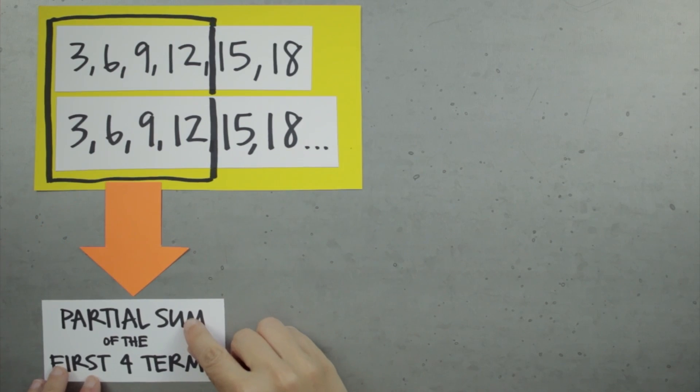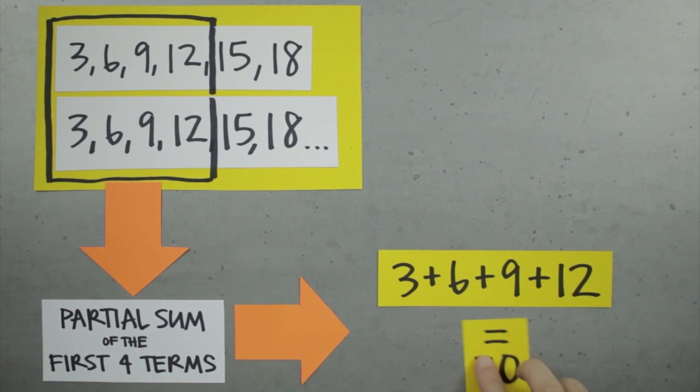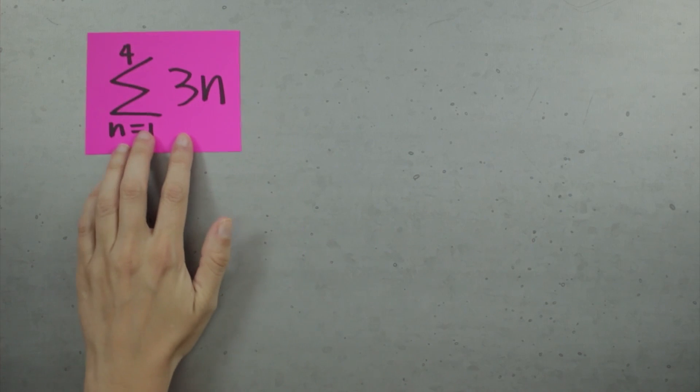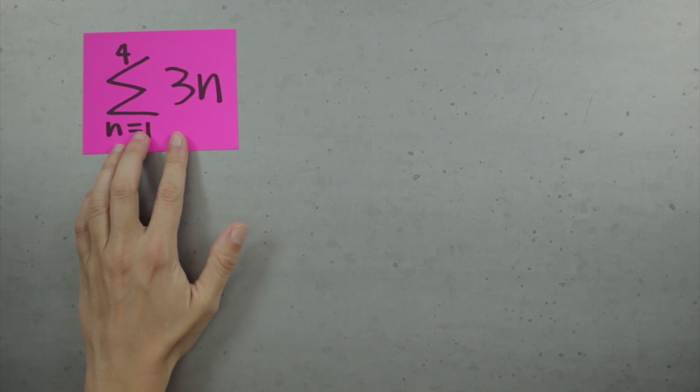The partial sum of the first four terms of the sequence is 30. If we want to express this partial sum of the first four terms of the sequence, we can do it in summation notation.